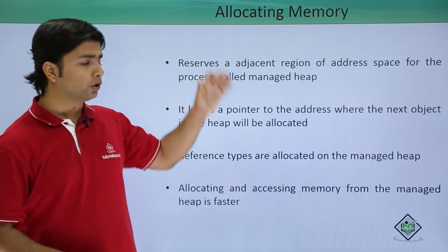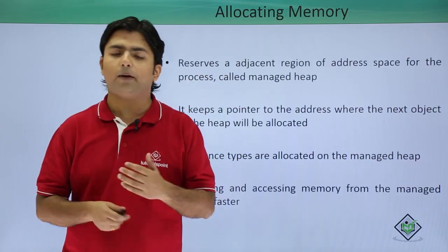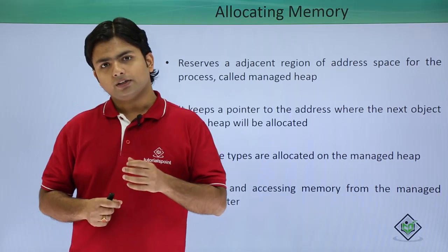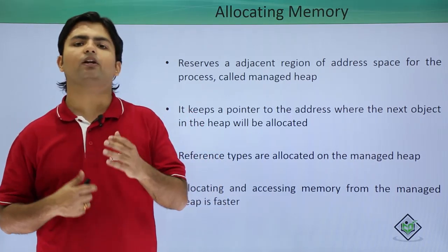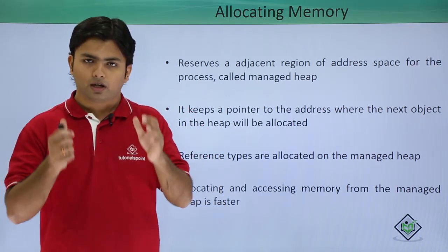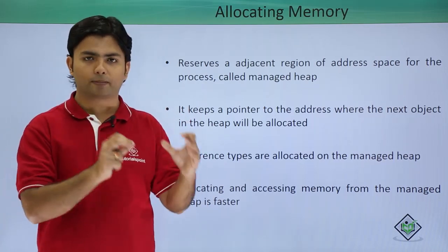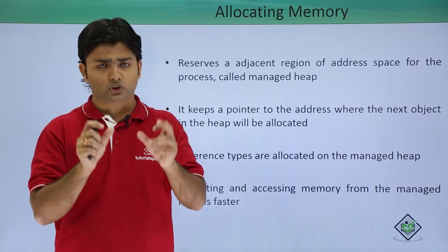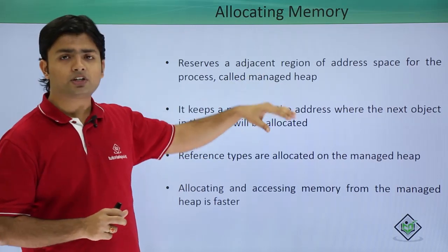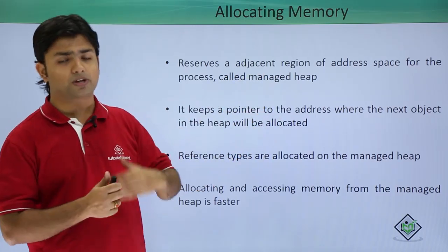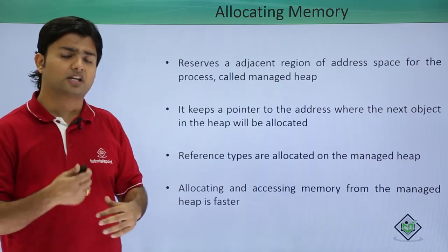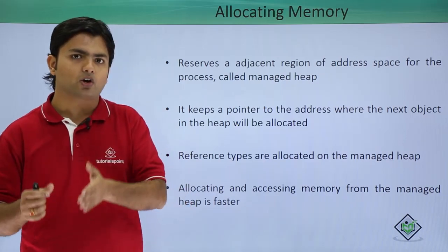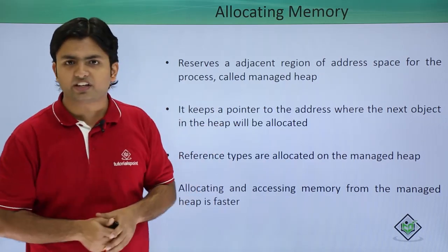Let's see how garbage collection manages to store data by allocating memory at run time. Whenever you create an object at run time, all that data gets stored in a memory allocation which we call the managed heap. Whenever data is stored in a managed heap, it will take a pointer to the next adjacent location where the next incoming object would be stored. So if you traverse the heap, you can get all the data linked to each other internally.